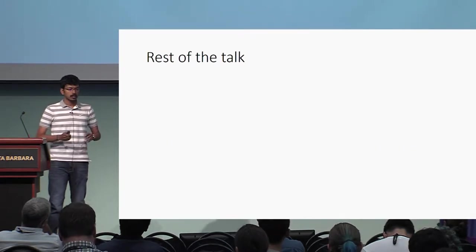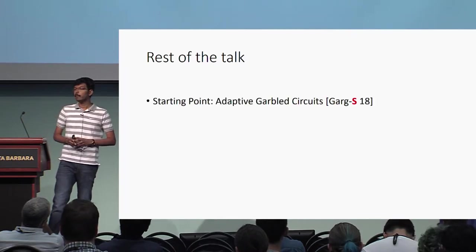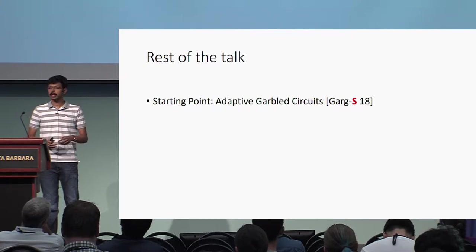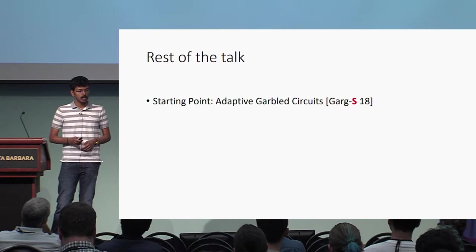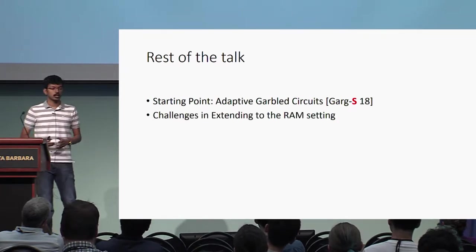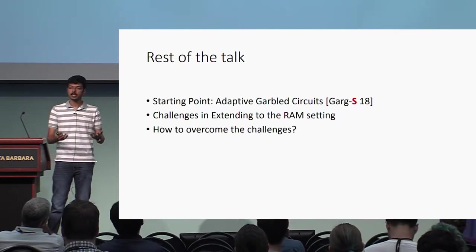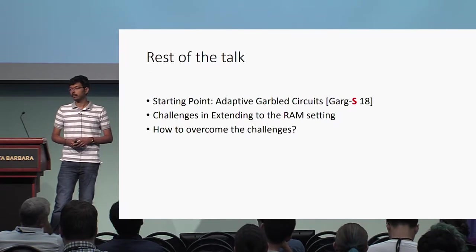In the rest of the talk, I will first give a brief introduction to the construction of adaptive garbled circuits which appeared in Eurocrypt this year — this is the starting point of our work. I'll then tell you about the challenges in extending this work to the RAM setting, and finally how to overcome those challenges and the main tools and techniques we use.